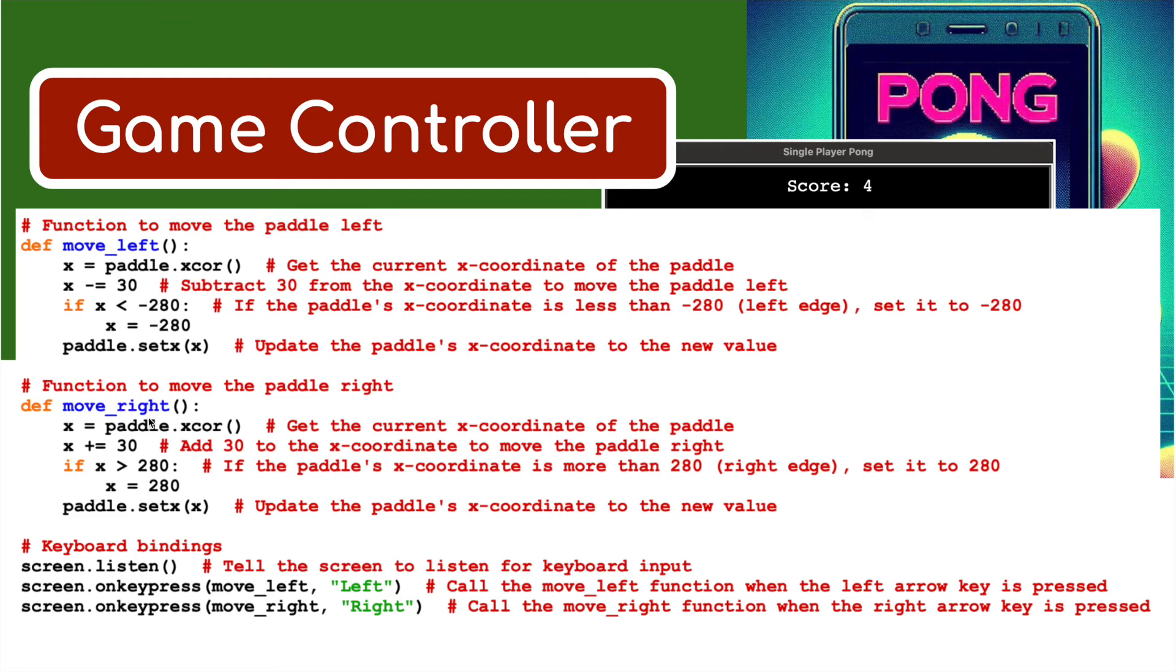Pressing the right key - it's exactly the same, but we're going to go in the positive direction. So you can see here, positive 280. That's how we would do that. Now we've got to join the keys - the keyboard keys - to these instructions.